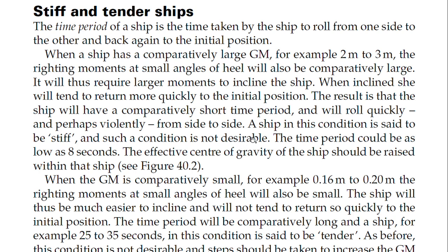When the ship has a comparatively large GM — where G is the center of gravity and M is the metacentric height, and GM is the distance between them — for example two to three meters, the righting moment at a small angle of heel will also be comparatively large. This means it will require a larger moment to incline the ship, and when inclined, she will tend to return more quickly to the initial position.